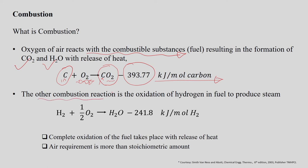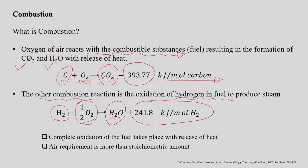Another combustion reaction is the oxidation of hydrogen in the fuel to produce steam. Hydrogen undergoes combustion to produce H₂O in the form of gas and releases a significant amount of energy per mole of hydrogen combusted. This is also a stoichiometrically balanced equation: one mole of hydrogen reacts with 0.5 moles of oxygen to produce H₂O. These combustion reactions need to be balanced stoichiometrically to understand whether the reaction is happening at the proper air-to-fuel ratio.